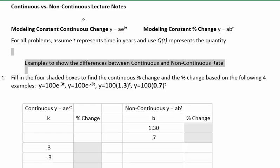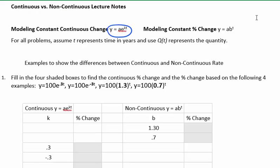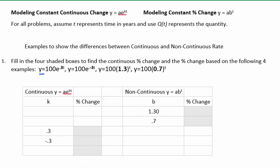In this video, I'll be comparing the difference between what's called a continuous growth rate and a non-continuous growth rate. This is the formula used to model continuous growth or decay. If you're modeling the growth or decay rate in a non-continuous way, you would use this model. Consider four examples: the first two use the continuous growth formula, and the last two use y equals ab to the t, representing constant percent change in a non-continuous way.